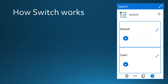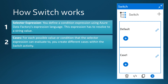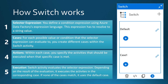Here we have the Switch Condition activity as seen in the Data Factory UI. First, we define a selector expression using Data Factory's expression language — this must resolve to a string value rather than a Boolean like with If Condition. We then define cases that are compared to the string value from the selector expression, and multiple cases can be created. Activities defined inside each case block execute when that specific case is matched. If none of the cases match, the default case is used.